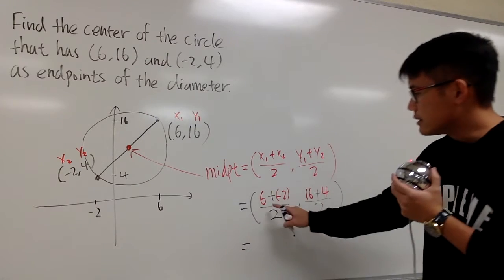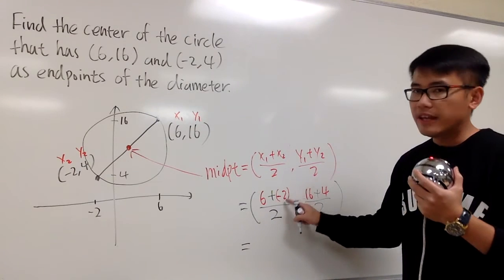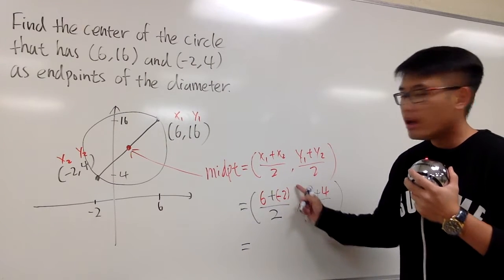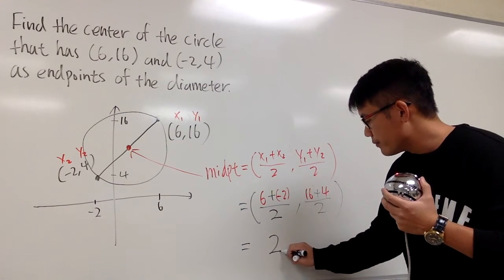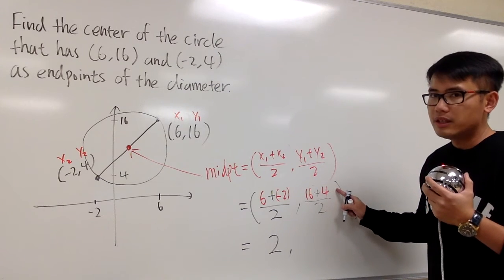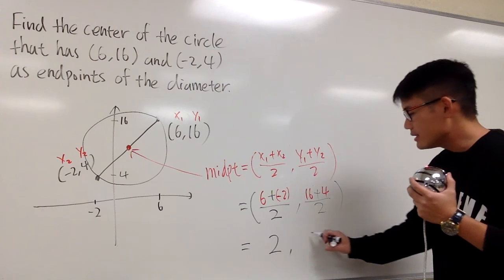Right here, let's see, 6 plus negative 2. In other words, 6 minus 2, which is 4. 4 over 2, we have 2. This one, 16 plus 4 is 20. 20 divided by 2 is 10.